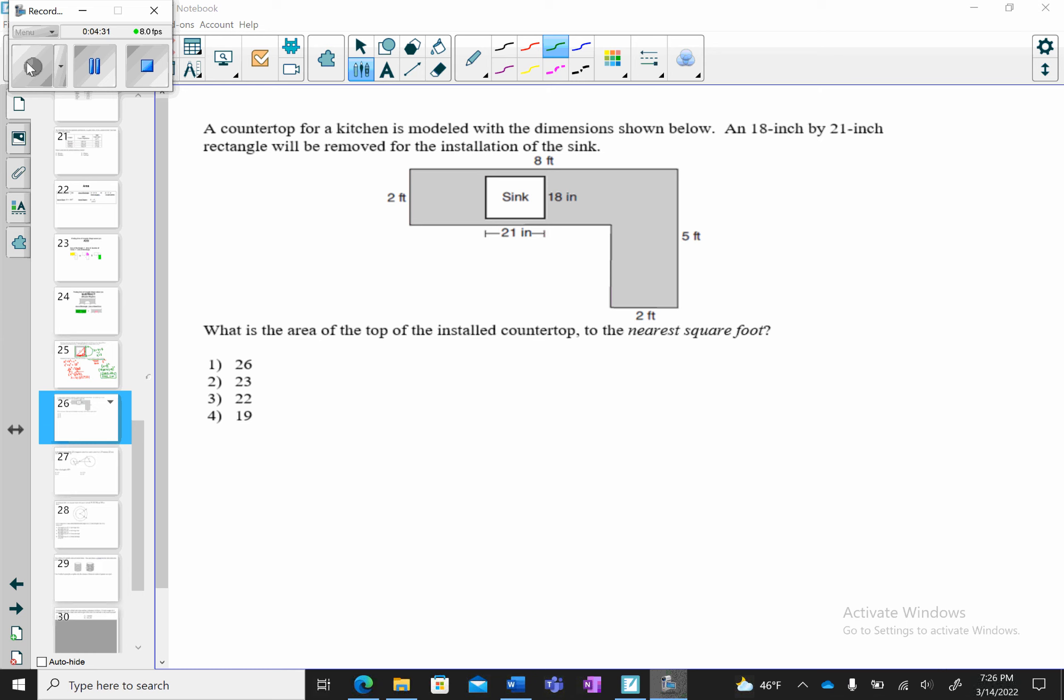So notice here, we're looking for the area of the shaded region, which means we're going to have to subtract. So we're going to find our two total areas and then end up subtracting that. So I kind of want to divide this into two rectangles.